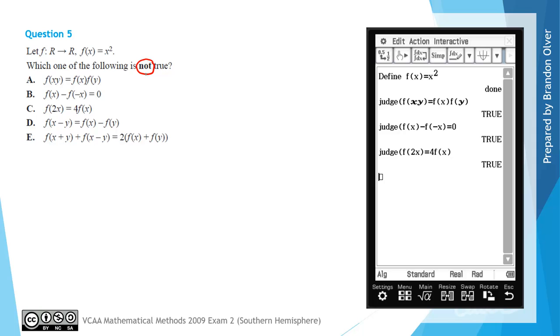We move on to the fourth option. We're going to judge whether f of x subtract y inside the bracket is equal to f of x subtract f of y. Then we hit execute, and this says undefined, so that's the answer to this question.